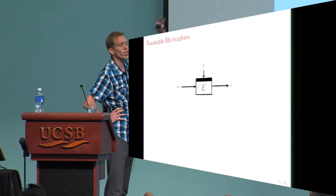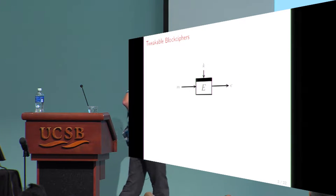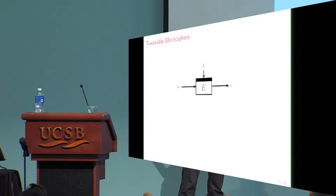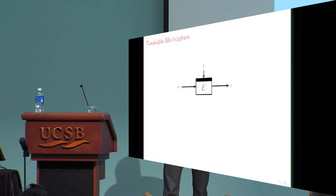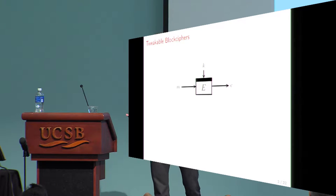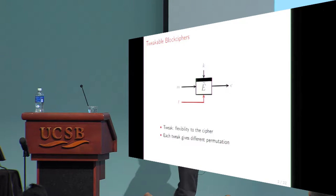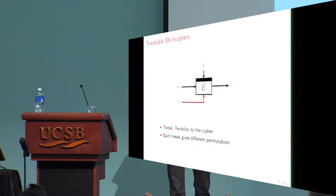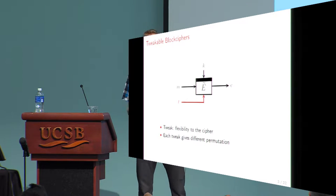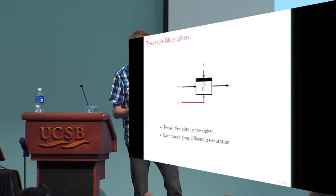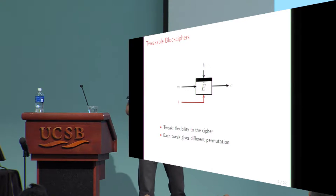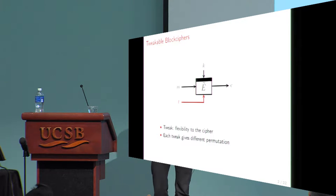A normal block cipher is essentially a permutation. For every secret key, it's a permutation, which means that if you encrypt the same message, you get the same ciphertext every time. To add some flexibility, people used tweaks. A tweak randomizes the scheme in some way — it's a public parameter such that every tweak gives an independent-looking permutation.